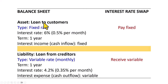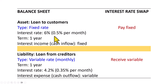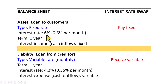Consider a bank that made loans to its customers at a fixed interest rate of 6% per annum, with interest received monthly. That means the bank will receive interest income at a fixed monthly rate of 0.5% over 12 months. If payments were quarterly, it would be 1.5% per quarter.